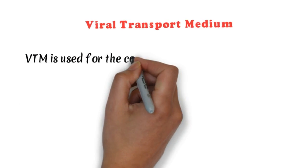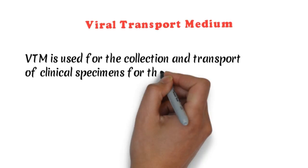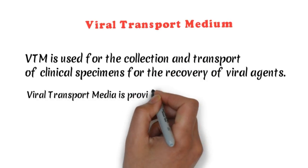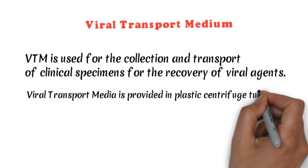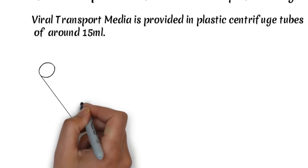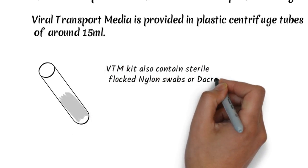VTM is used for the collection and transport of clinical specimens for the recovery of viral agents. VTM is provided in a plastic centrifuge tube of around 15 ml which contains 3 ml VTM inside the tube. VTM also contains a triflocked nylon swab or a dacron swab.